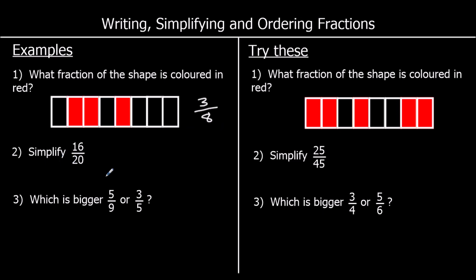Simplify the fraction 16 over 20. We're trying to get the smallest numbers possible on the top and bottom of the fraction. To do that, we need to look at what times table 16 and 20 are both in. The biggest times table they're both in is the 4 times table. 16 is 4 fours, and 20 is 5 fours. So 16 over 20 is the same as 4 fifths, and we can't simplify it any more. So 4 fifths is our answer.